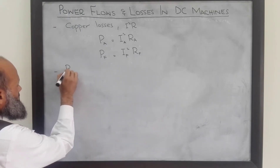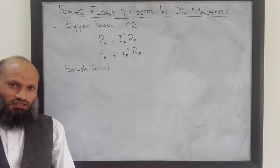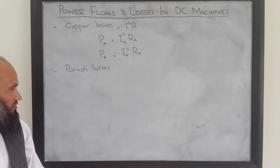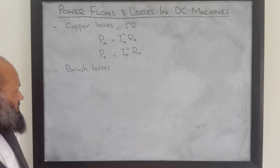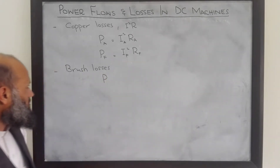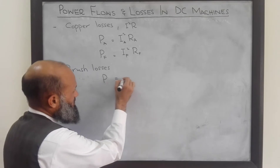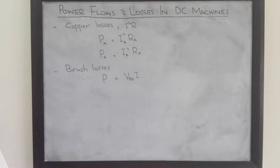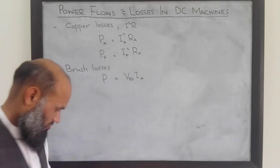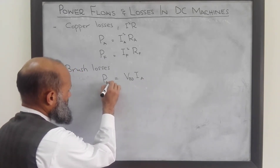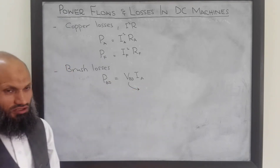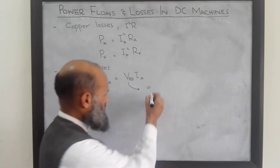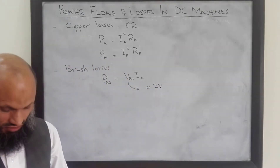Then we have brush losses. To convert the voltage signal into a unidirectional voltage signal in DC machines, we have an arrangement of brushes and commutator segments. There is a voltage drop across the brushes, so the brush power loss equals the voltage drop across the brushes multiplied by the armature current flowing through them. This brush contact voltage drop is approximately constant for a wide range of armature currents and is approximately equal to 2 volts in DC machines.